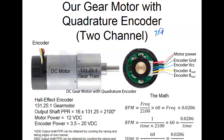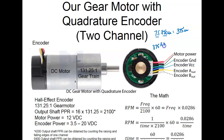So we've got 7.5 divisions times 50 microseconds — that's 375 microseconds. So we're going to go 375 times 2,100, and then use your reciprocal key: 1/x or x to the minus one, hit the equals key, and then times 60.